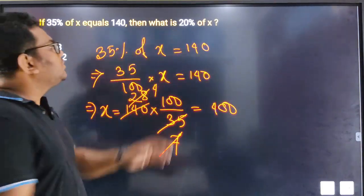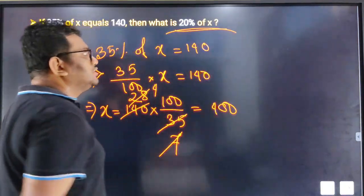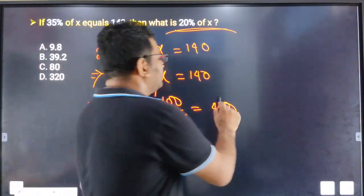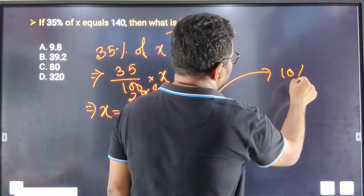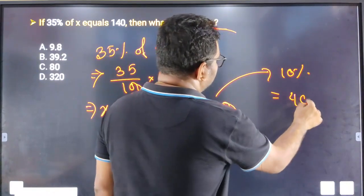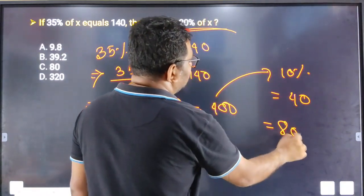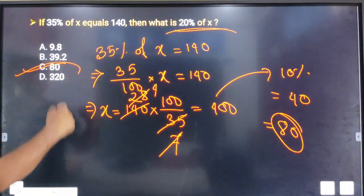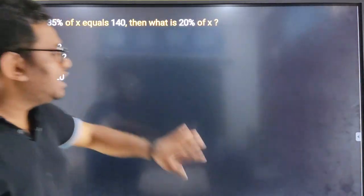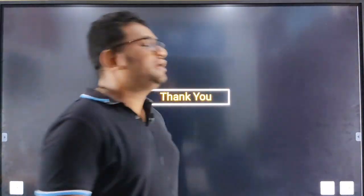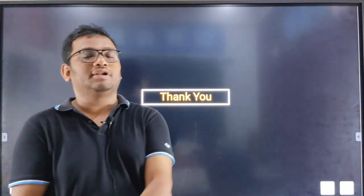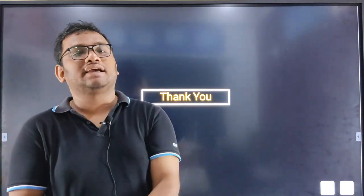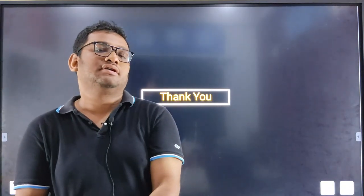If X equals 400, then 20% of X equals 20 divided by 100 multiplied by 400, which equals 80. Thank you for watching this video.